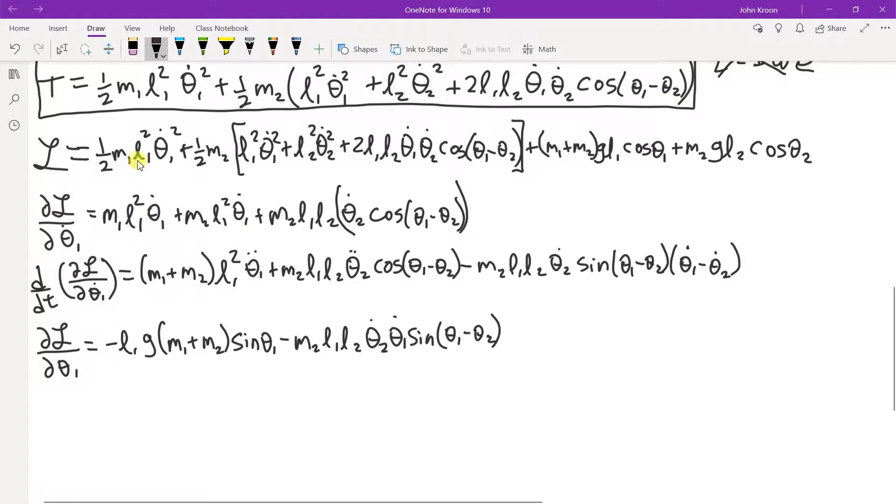So for the DL by D theta 1, you'll go through, and you'll find, so this term would be zero, because that's not a theta. That's a theta dot. The same for here and here. This right here is the first term that is non-zero. So you have a theta 1 and a theta 2. So the derivative of cosine is negative sine.